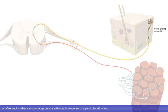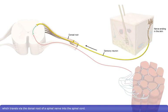A reflex begins when sensory receptors are activated in response to a particular stimulus. This fires an action potential along a sensory neuron, which travels via the dorsal root of a spinal nerve into the spinal cord.